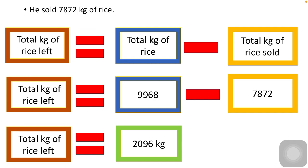The next statement is: he sold 7872 kg of rice. He was having about 9968 kg of rice in his store, but now he has sold 7872 kg. So what is left in his store? Total kg of rice left equals total kg of rice he had at first minus total kg of rice sold: 9968 minus 7872. The answer we get is 2096 kg.